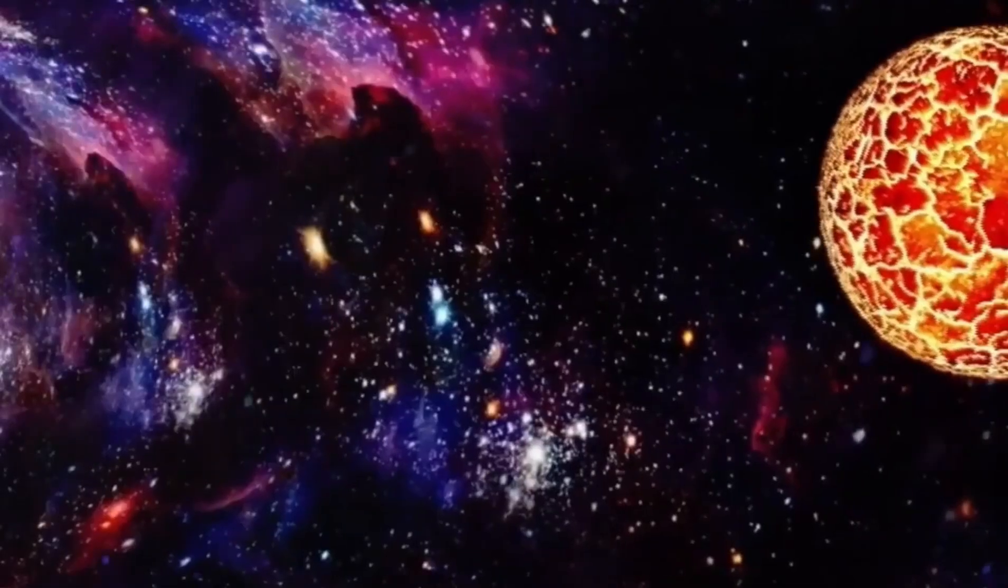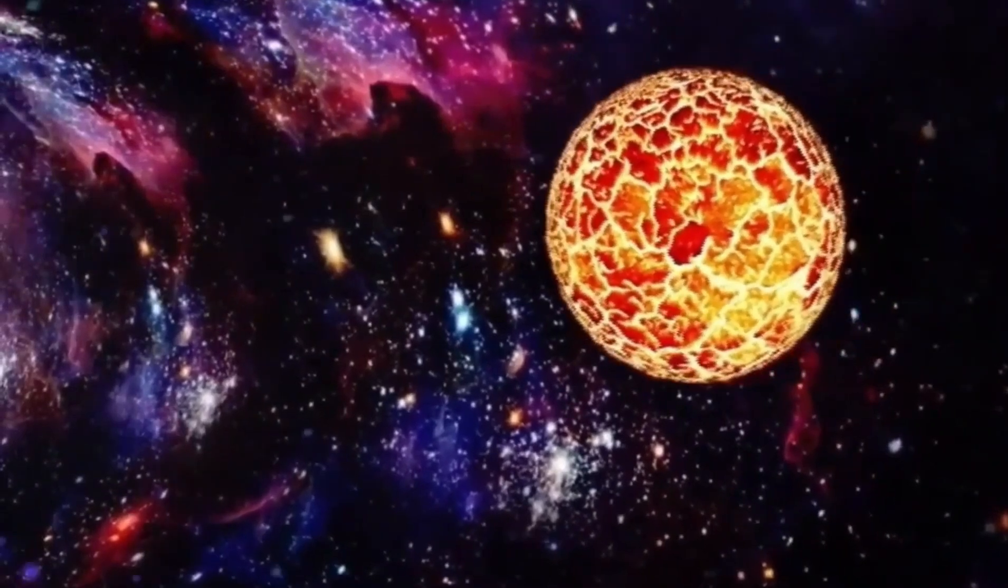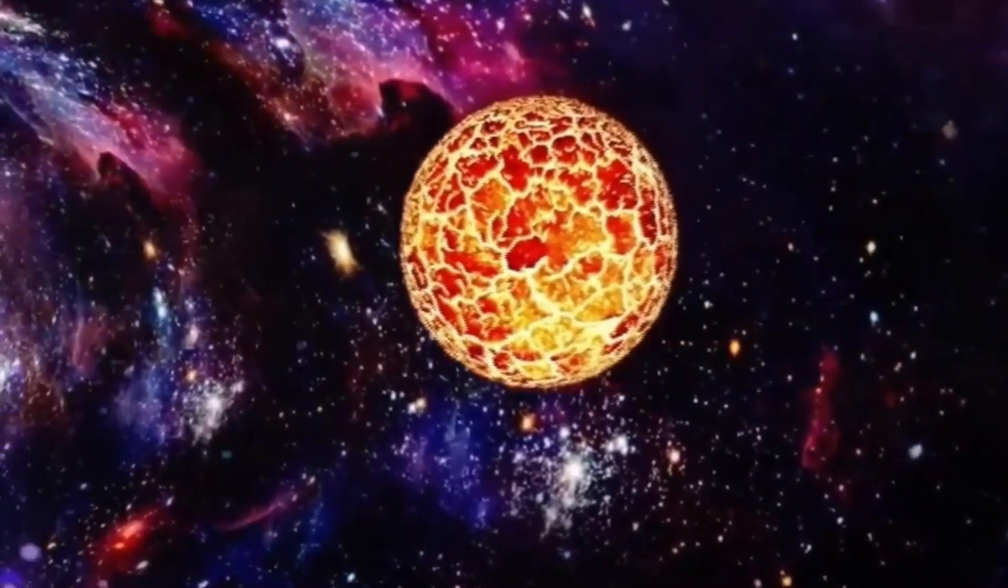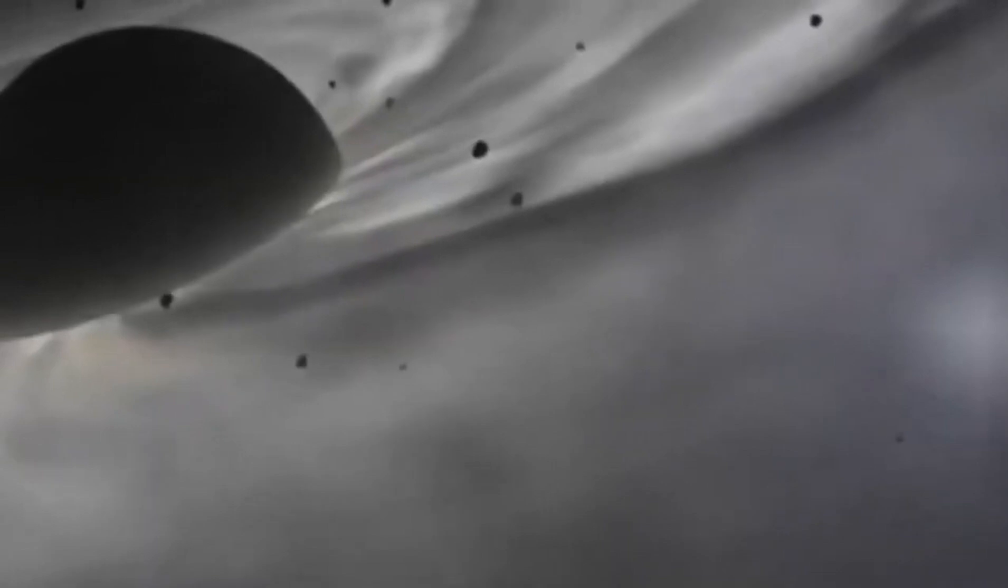This type of black hole is called a Schwarzschild black hole. It has mass, which is just how much stuff went into making it. But it doesn't have any electric charge or spinning motion.